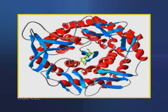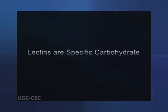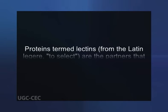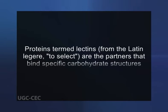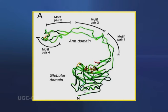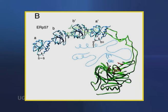Let's have a detailed account of lectins. Lectins are specific carbohydrate-binding proteins. Different carbohydrate structures displayed on cell surfaces are well suited to serve as interaction sites between cells and their environments. Proteins termed lectins, from the Latin legere meaning to select, are the partners that bind specific carbohydrate structures. Lectins are ubiquitous, being found in animals, plants, and microorganisms. Some lectins, such as calnexin, function as chaperones in protein folding.